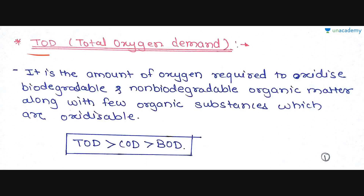Let's start with this lesson, which begins with total oxygen demand. Before this, we have seen what the characteristics of sewage are in detail. We have seen BOD, we have seen COD, and we have solved some 2-mark and 1-mark MCQs related to BOD and COD. So next is TOD, that is total oxygen demand.